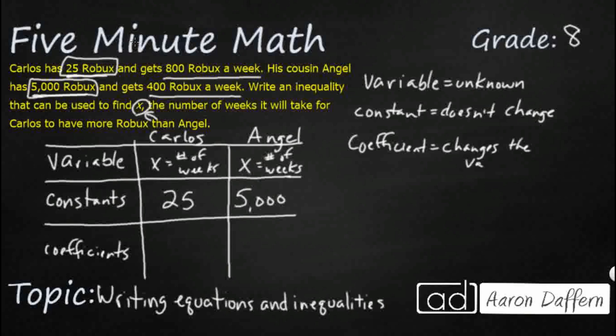So it's multiplied by the variable. And you see that this term right here, a week. A week. X is the number of weeks. So that's our clue that we've got some coefficients. So Carlos has got 800 a week. And Angel has 400 a week. All right. So those are our coefficients.